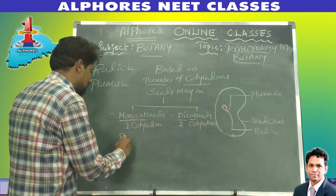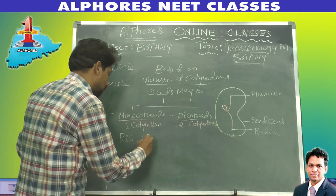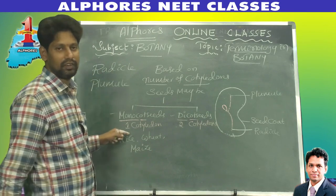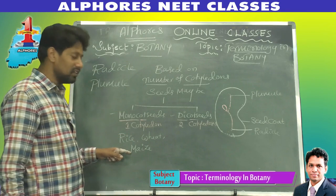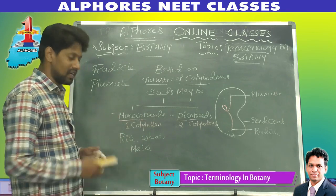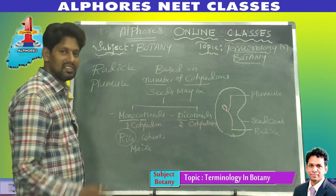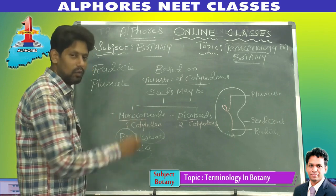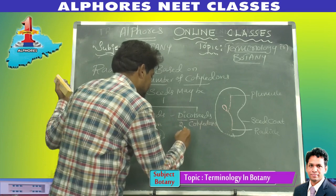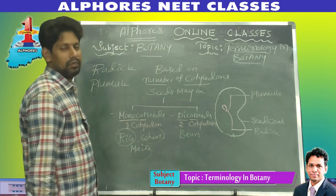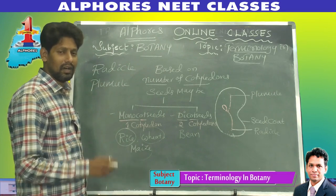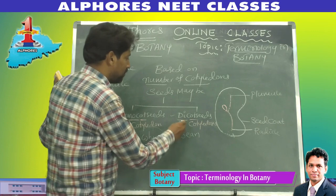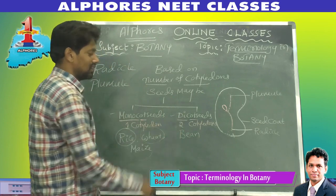Examples of monocot seeds: rice, wheat, and maize — each has one cotyledon. Examples of dicot seeds: bean, red gram, black gram, and almond — each has two cotyledons. Best example for dicot seeds is bean.